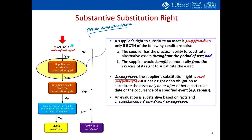Returning to the top of the flowchart: if an identified asset exists, there are no substantive substitution rights from the supplier's perspective, and the supplier has conveyed the right to control the use of the identified asset to the customer — which is the normal situation — then the contract can be considered a lease under HKFRS 16. Now, to reinforce our understanding of the definition of a lease, let's go through an example together.